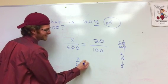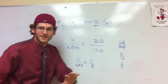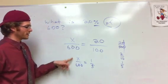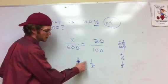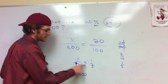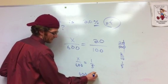So now we have x over 600 equals 1 over 5. Now we do our cross multiplication. 600 times 1 is 600. x times 5 equals 5x.